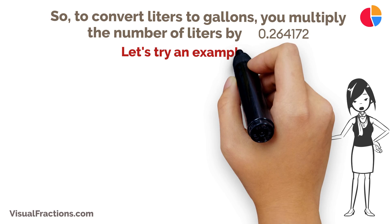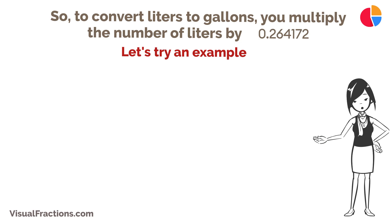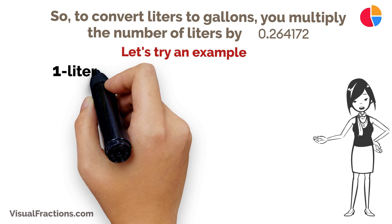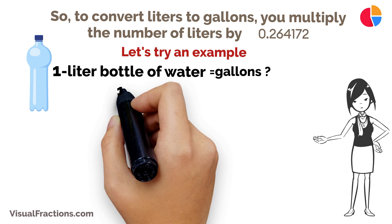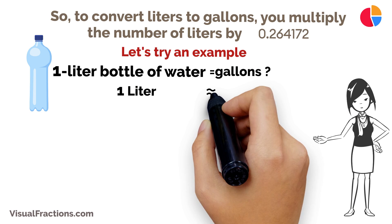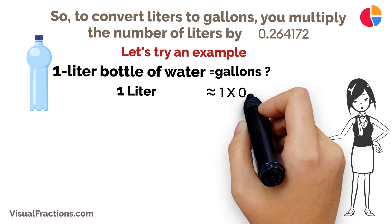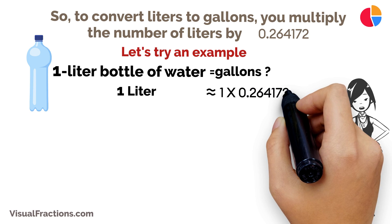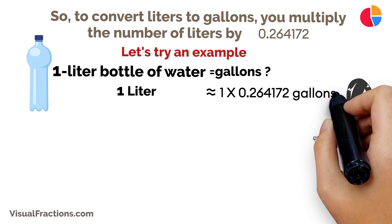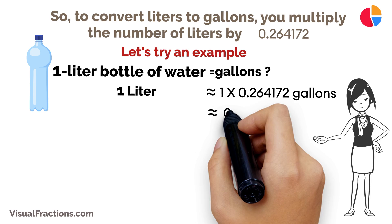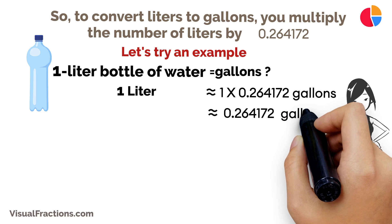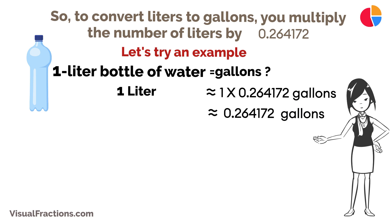Let's try an example. If you have a one liter bottle of water and you want to know how many gallons that is, you would multiply one liter by 0.264172. This gives you approximately 0.264172 gallons.